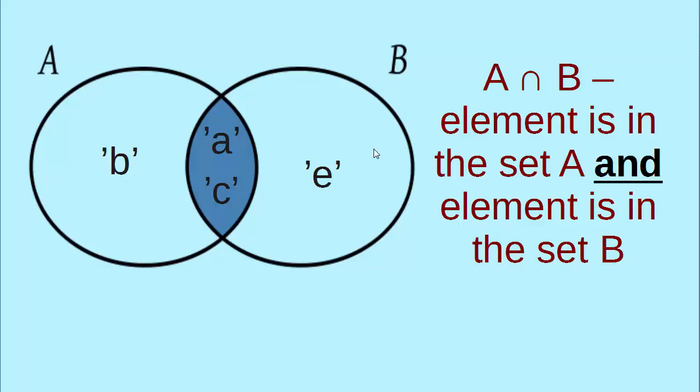So the main keyword for this intersection is AND. Our element is in set A and in the set B.